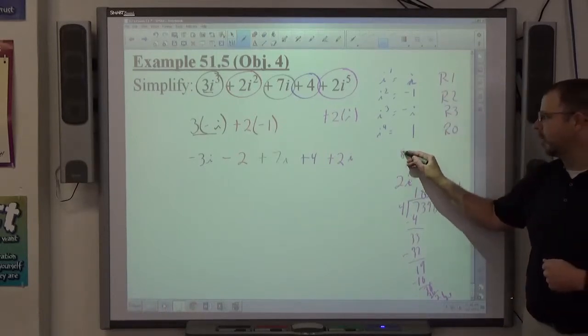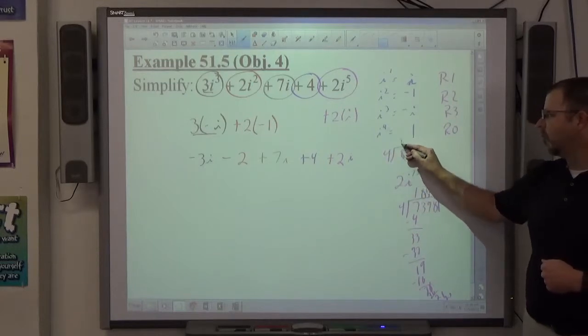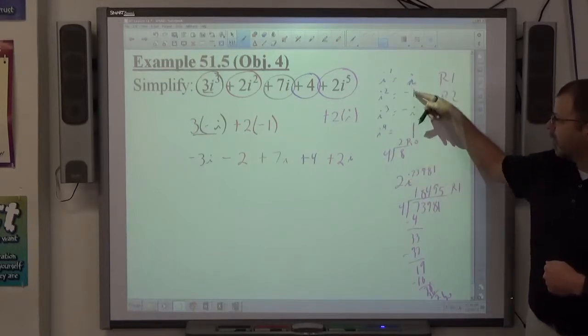Just to prove it, let's suppose it was 8. 4 into 8 is 2, remainder 0, right? 1, 2, 3, 4, 5, 6, 7, 8. Alright.